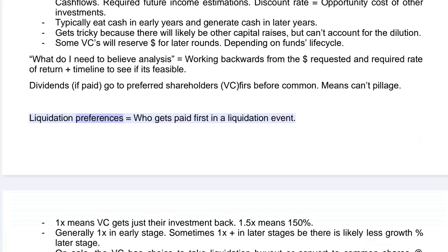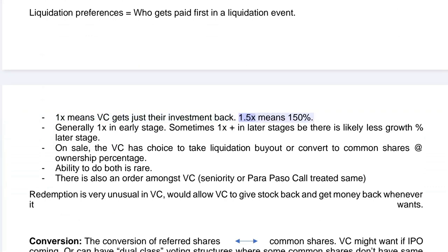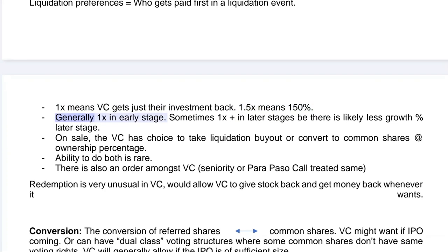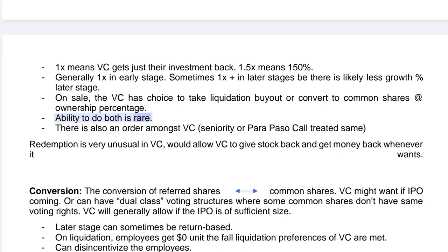Liquidation preferences determine who gets paid first in a liquidation event. 1x means the VC gets just their investment back; 1.5x means 150% of their investment. Generally, 1x is used in early stage deals, and sometimes also in later stages where there is likely less growth remaining. On a sale, the VC has the choice to take their liquidation payout or convert to common shares based on their ownership percentage.